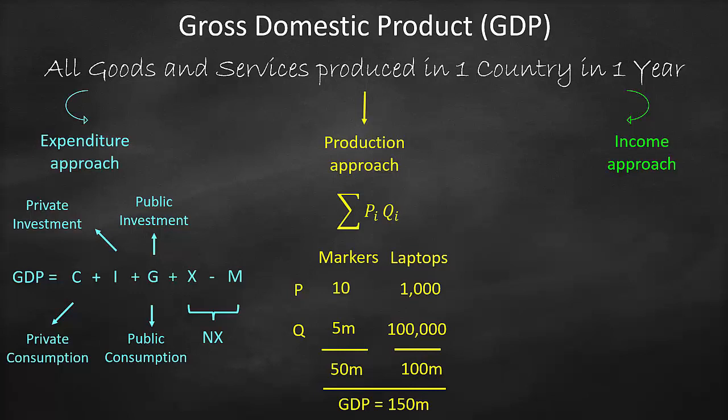We have three approaches to measure GDP. If asked for the GDP formula, the default one is the expenditure approach: GDP = Consumption + Investment + Government Spending + Exports − Imports.